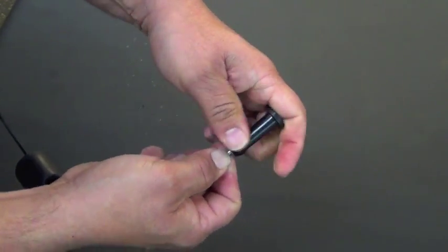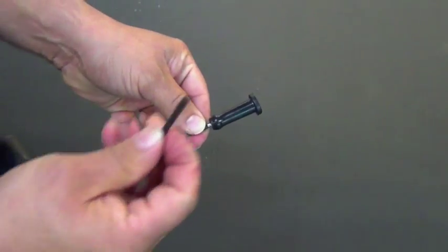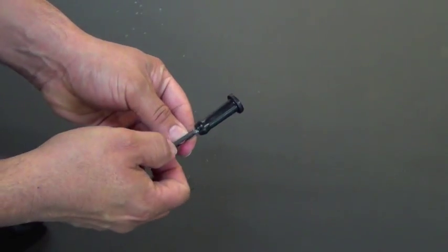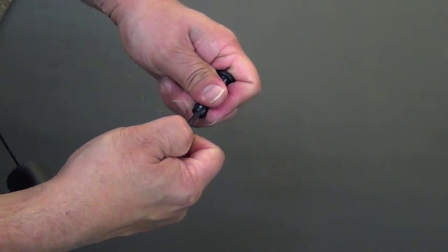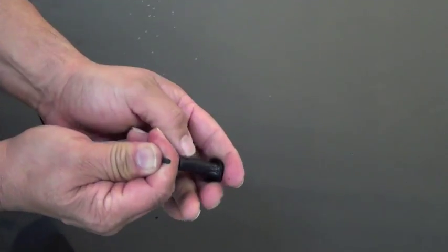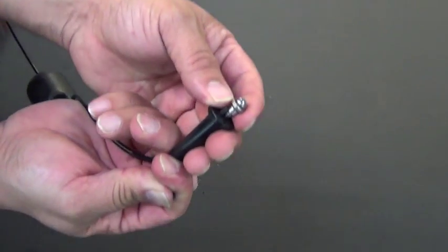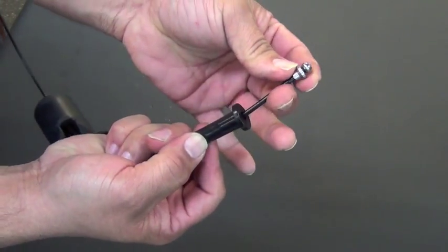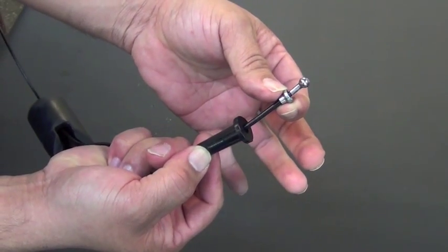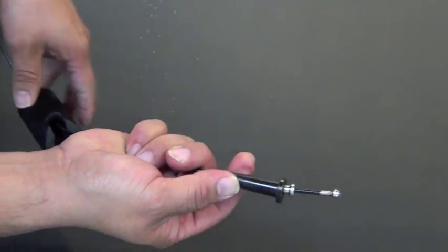insert the same number 122 hex key used previously into the end of the cable stress reliever. Push both the reducer and ball shank through so that both pieces exit the other end. Remove the hex key from the cable stress reliever from its point of insertion.